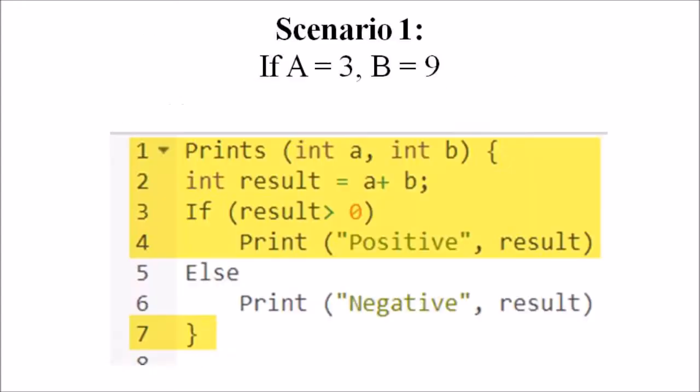In scenario 1, if a equals 3 and b equals 9, then the integer result equals a plus b, that is 3 plus 9 equals 12. The checking condition verifies if result is greater than 0 — that is, 12 is greater than 0 — which is true, so the print statement is executed and we exit the function. The statements marked in yellow are those executed as per this scenario.